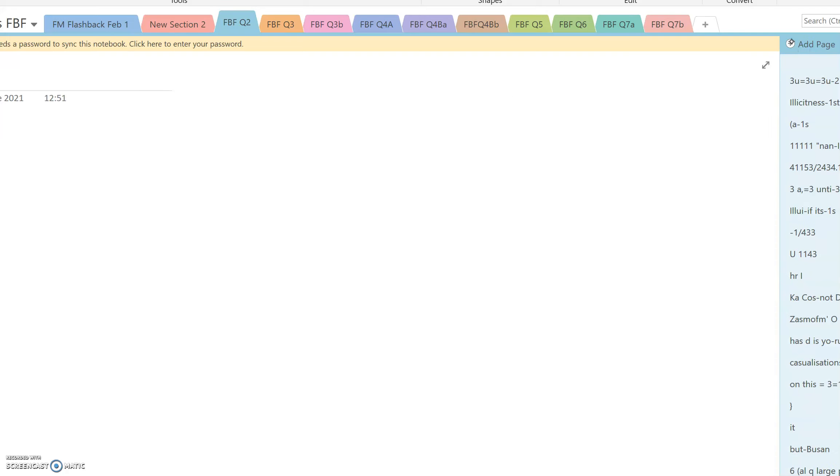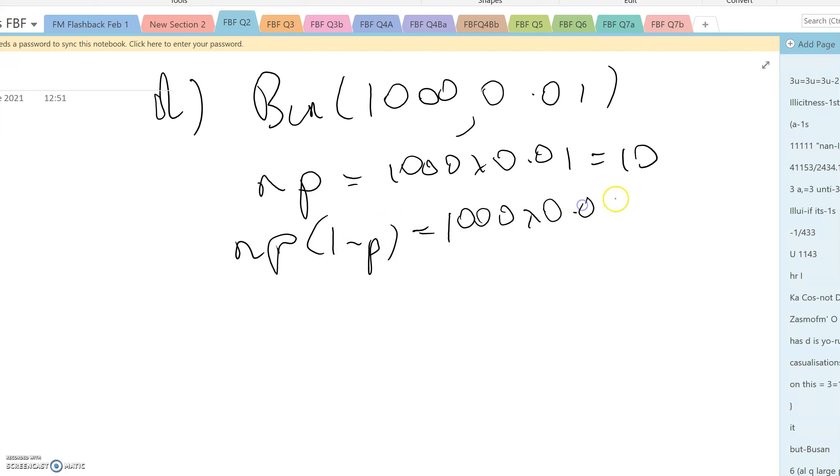Part d, it's a binomial with n is 1000 and p is 0.01. The mean is np which is 1000 times 0.01 which is 10. The variance is np(1-p), which is 1000 times 0.01 times 0.99, and that comes to 9.9.